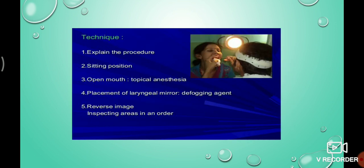The procedure for indirect laryngoscopy: explain the procedure to the patient. The patient is placed in the sitting position with the mouth open. Topical anesthesia is applied. Then the laryngeal mirror — size 4 or size 6 — which has been warmed and tested on the back of the hand, is introduced into the mouth.